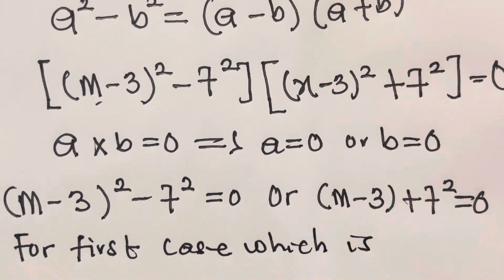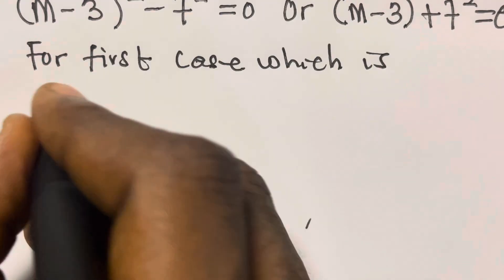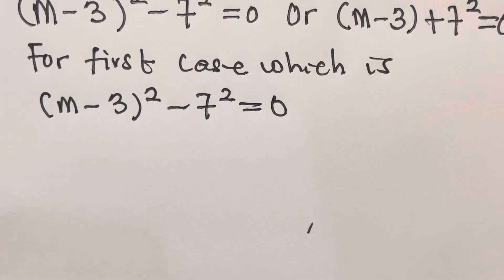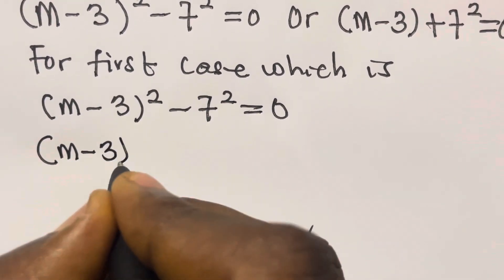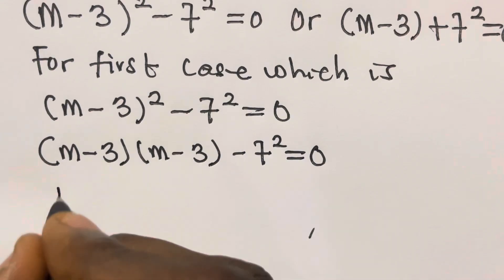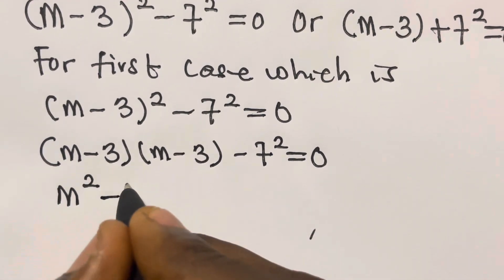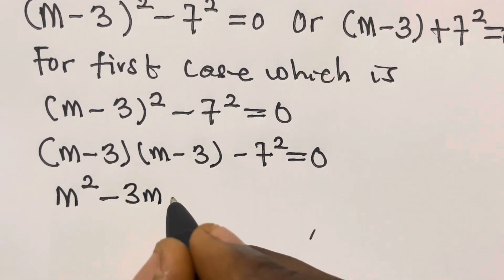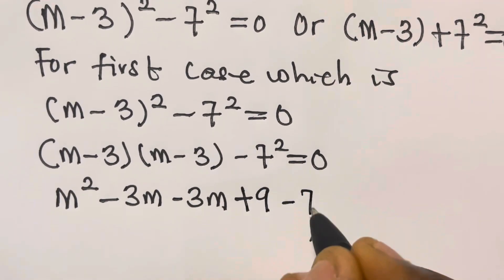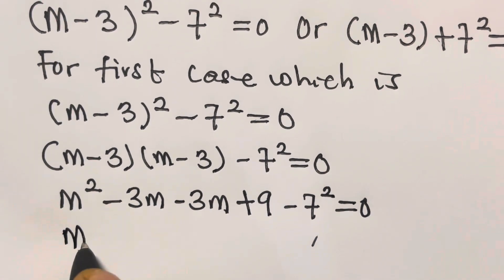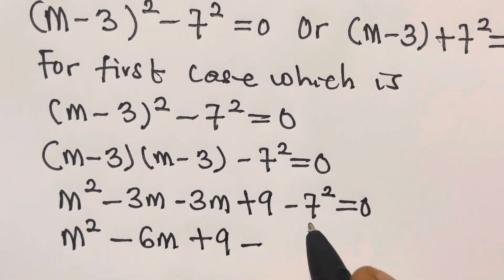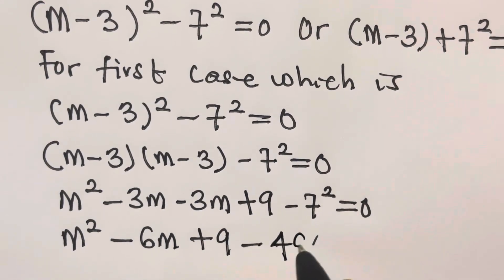For Case 1, (m minus 3) squared minus 7 squared equals zero. Expanding (m minus 3) squared gives m squared minus 6m plus 9, and 7 squared is 49. So we have m squared minus 6m plus 9 minus 49 equals zero, which simplifies to m squared minus 6m minus 40 equals zero.